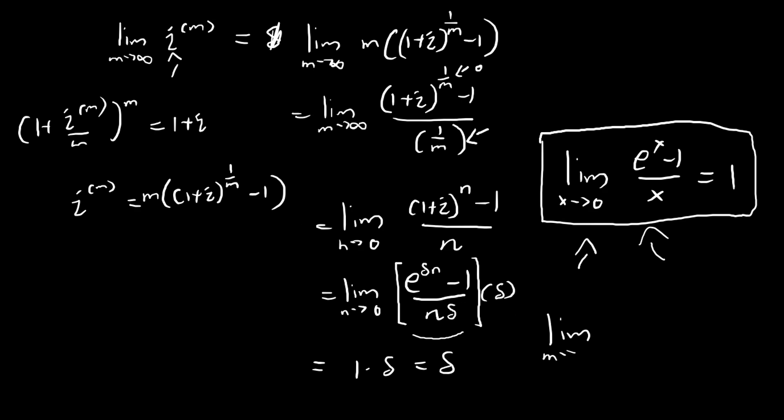So there we have it, we've proved that limit m tends to infinity for i_m is actually equal to delta. And so this sort of confirms the way that we can actually interpret delta as the nominal rate of interest, only except it's a nominal rate of interest where the compounding is done continuously. So I hope this sheds a bit of light on what exactly the force of interest is, and I'll see you in the next video. Bye.